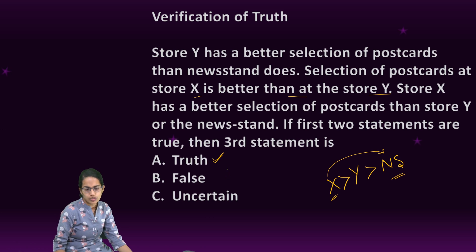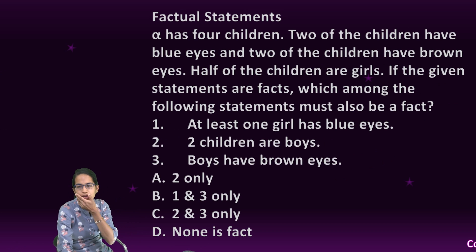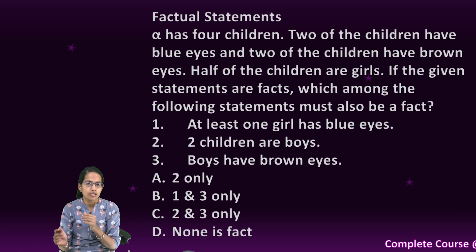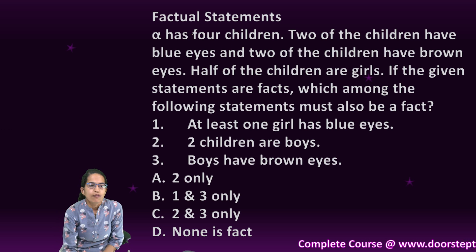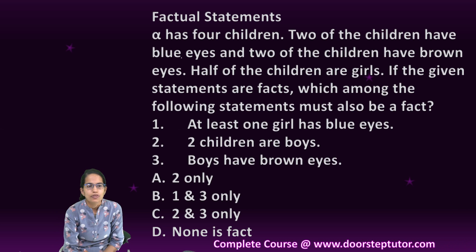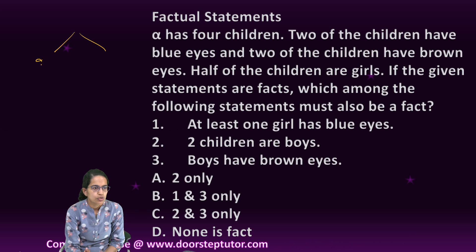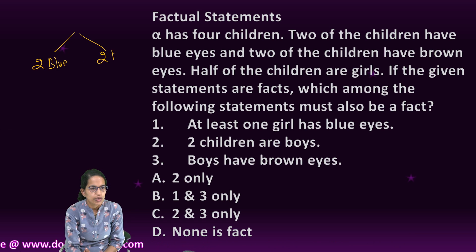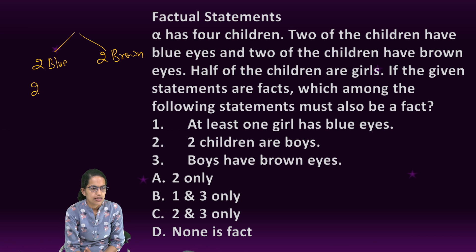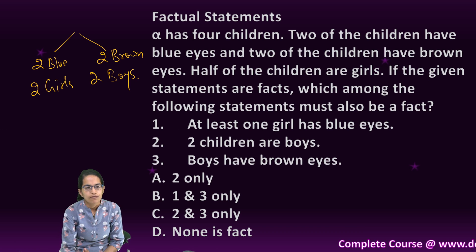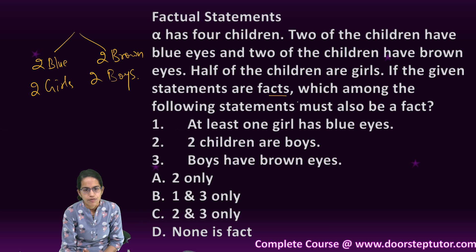Now let's do some factual questions. Alpha has four children: two of them have blue eyes and two of them have brown eyes. Half of the children are girls, that means two are girls and two are boys. Given these statements are facts, which of the following must also be a fact?